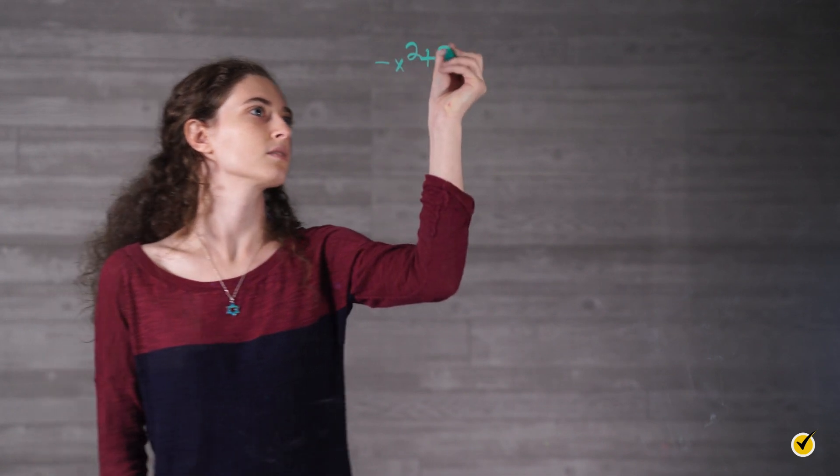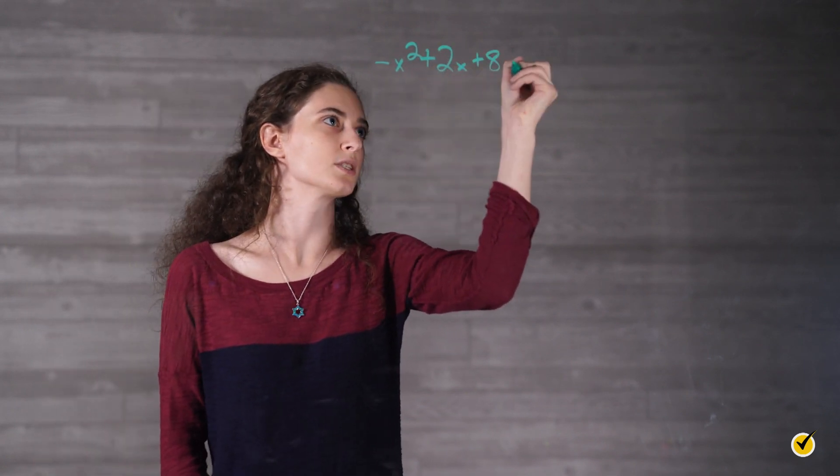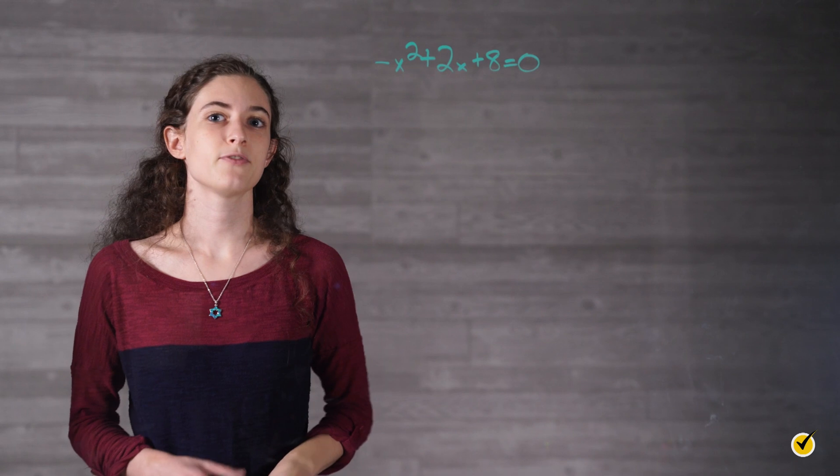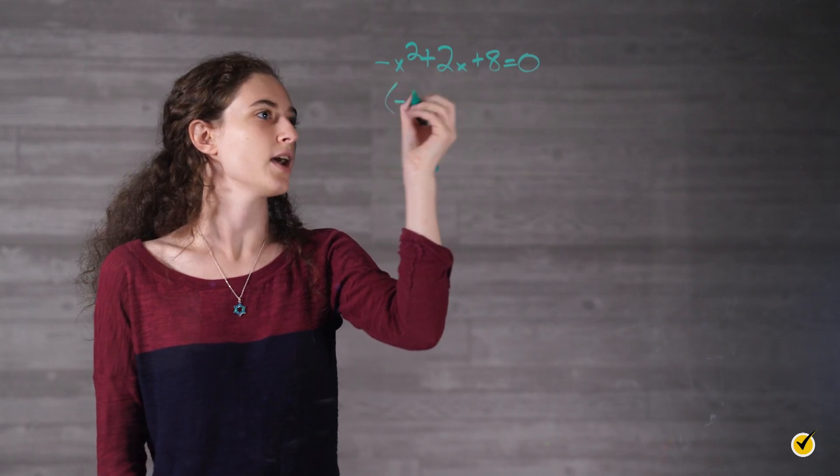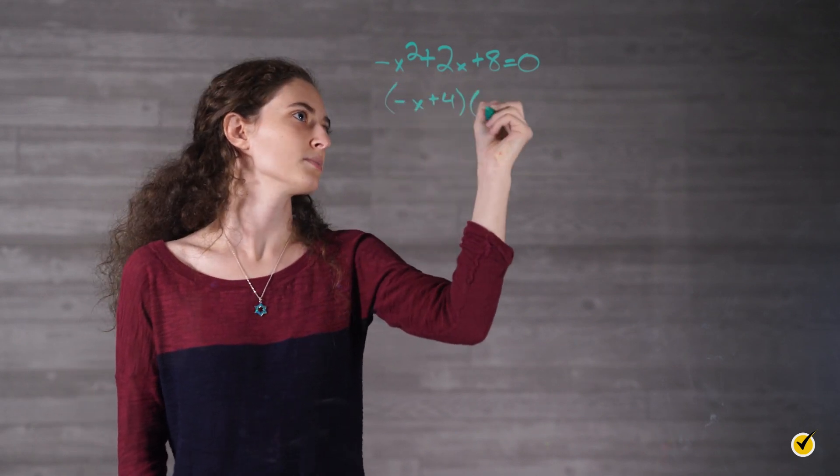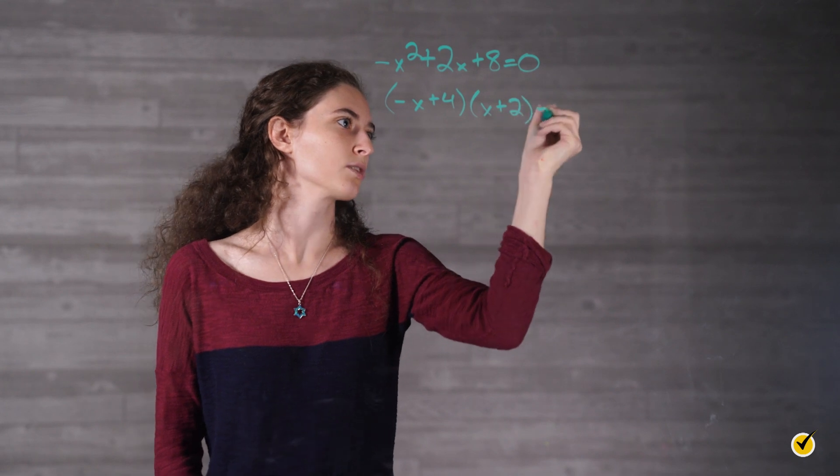Sometimes quadratic equations can be simplified and solved by factoring. Looking at our example equation, we have negative x squared plus 2x plus 8 equals 0. The left side can be factored into negative times (x minus 4) times (x plus 2) equals 0.